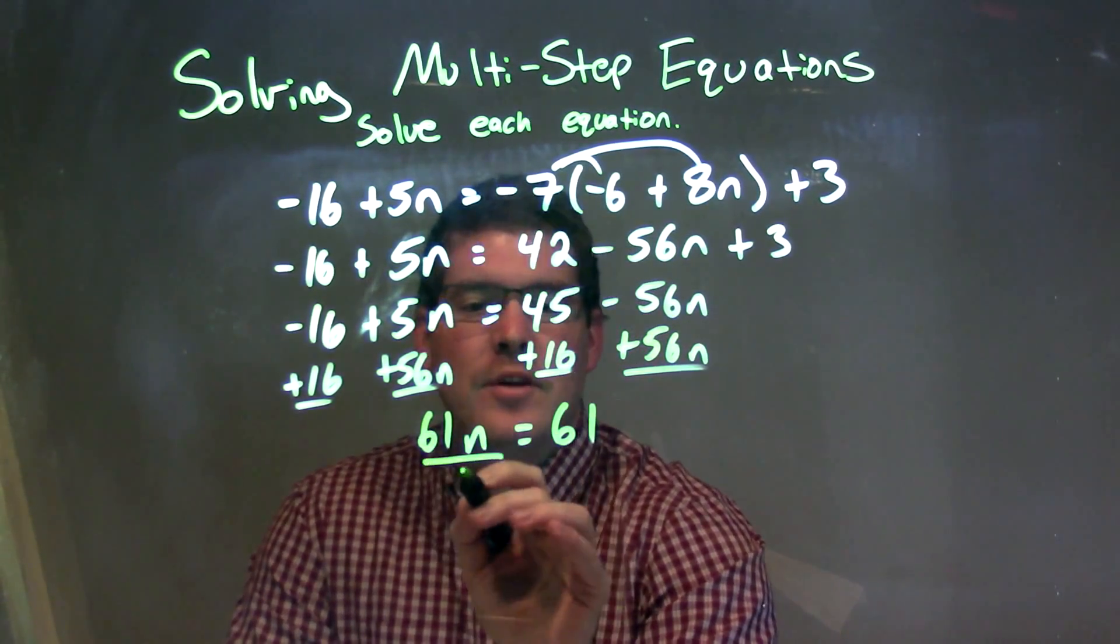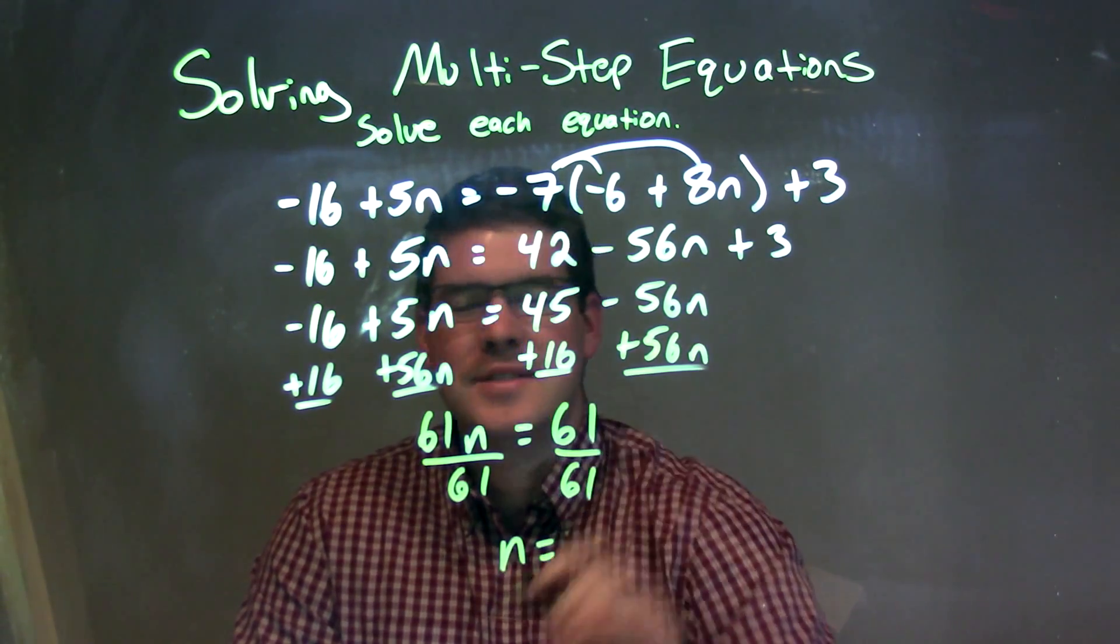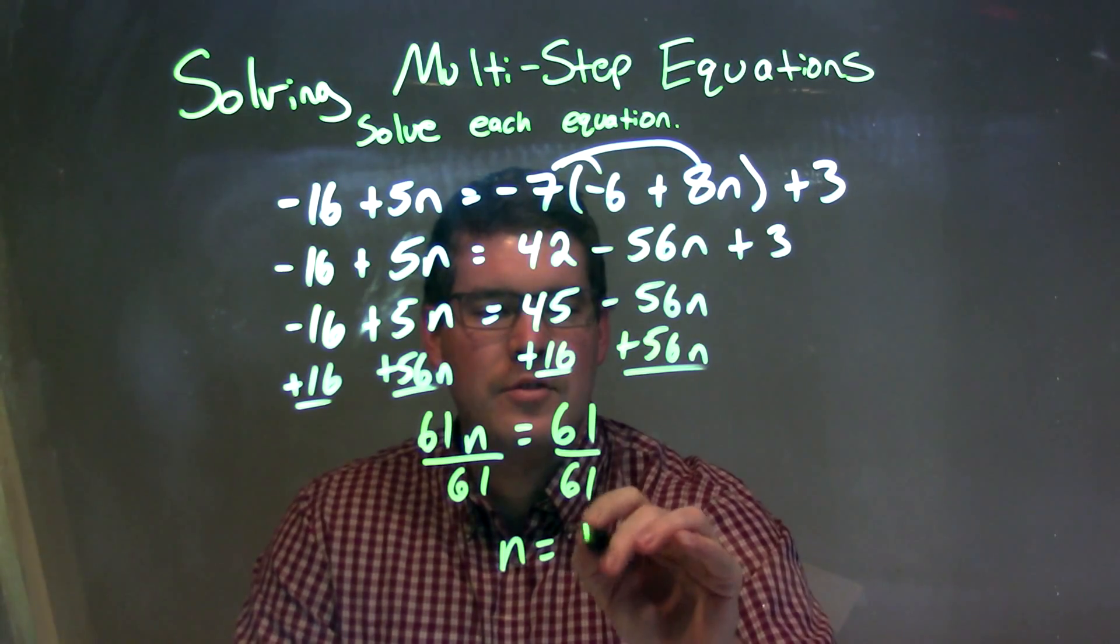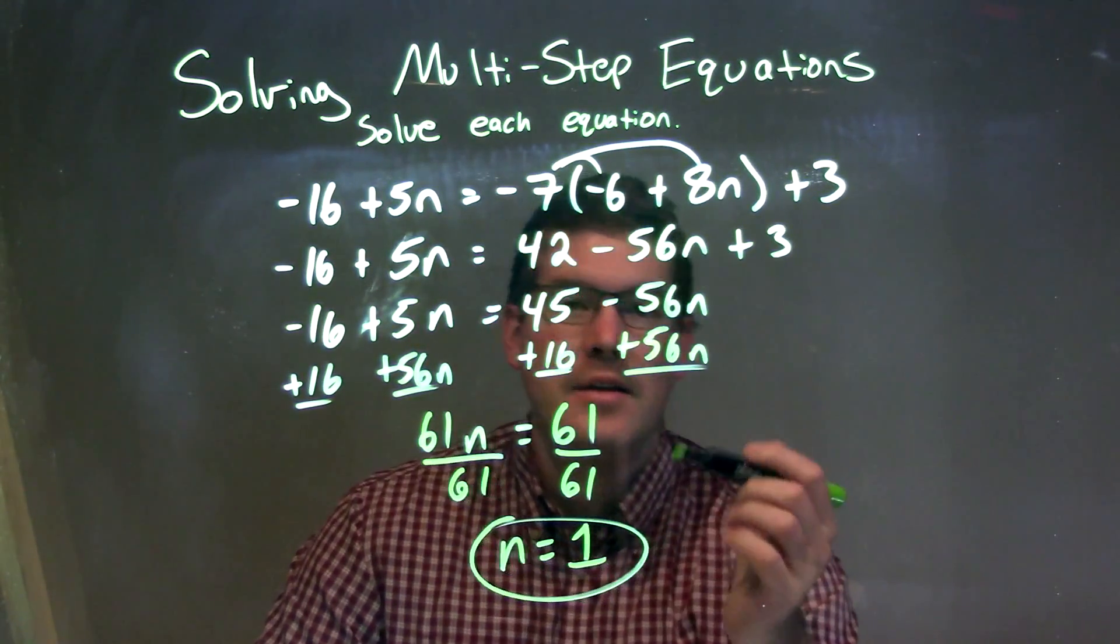61n equals 61. I then have to get n by itself, so I divide both sides by 61. That leaves me with n isolated. 61 divided by 61 is just 1, and there we go. Our final answer here is n equals 1.